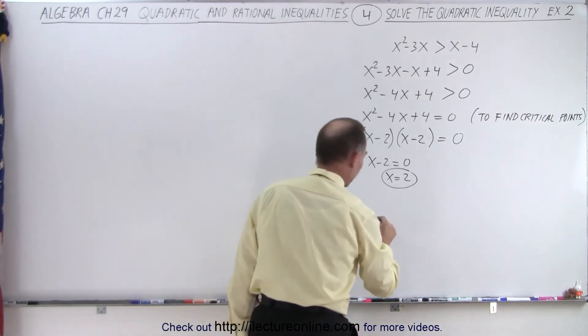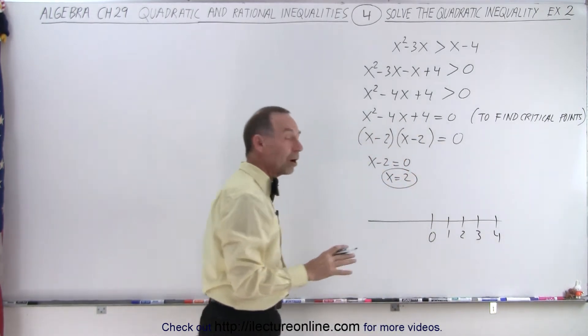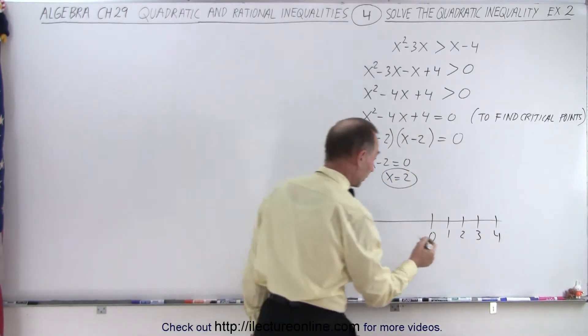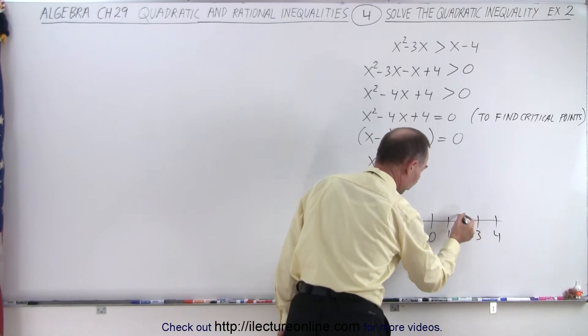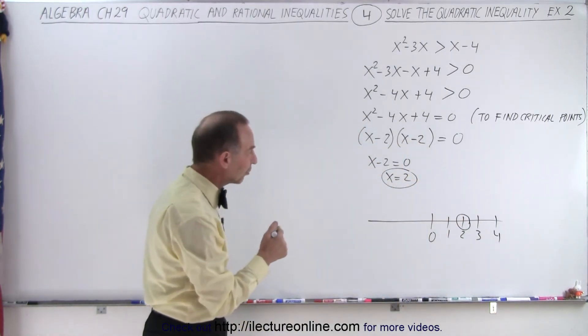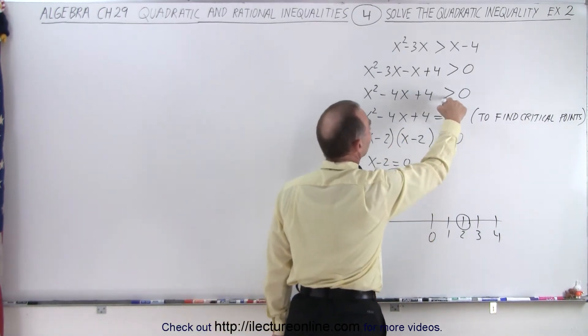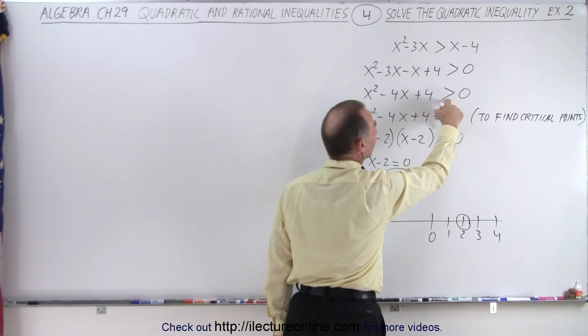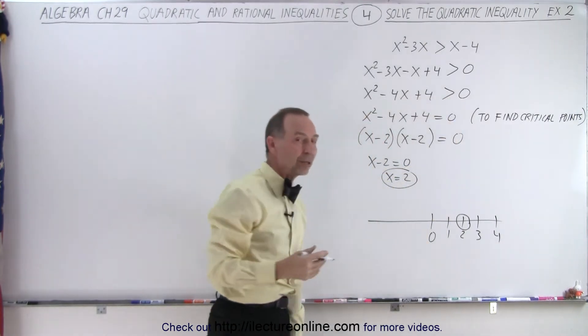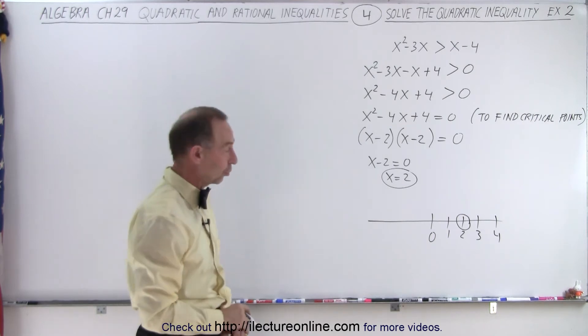Let's draw the number line. 2, 3, 4. And let's mark the critical point on here. The only one that we have is the number 2. We draw a circle around that. And notice in this case, we're not going to fill in the circle because we know that we have an inequality symbol and not an equal sign. It does not include the critical point. It does not include the end point. So 2 is not part of the solution.